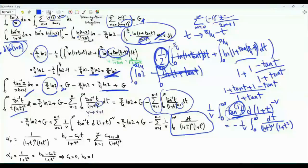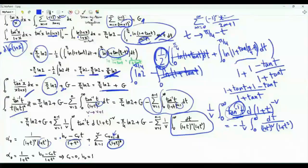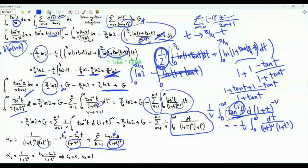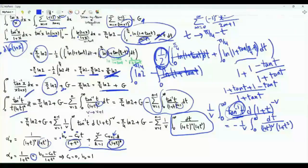The challenge is to evaluate this integral. Let's call the integrand α_v, where v is a positive integer. We do partial fractions: α_v is written as 1 over (1+t²) times (b_v minus c_v·t) over (1+t²), plus a summation from k=1 to v of (c_{v+1−k}) over (1+t)^k. If we allow v=0, we just have 1 over (1+t²), so the sum is 0, giving b_0 minus c_0·t over (1+t²). For equality for every positive t, b_0=1 and c_0=0.